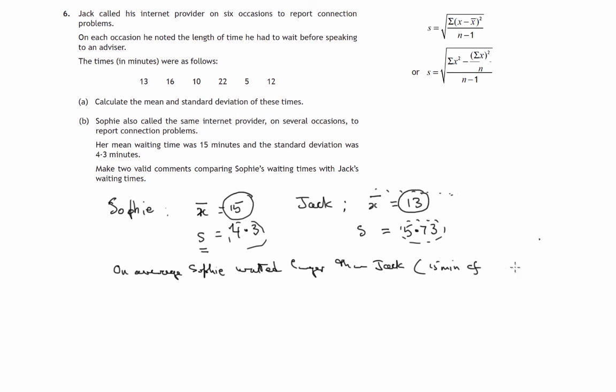So on average, Sophie waited longer than Jack. That is 15 minutes compared to 13 minutes. So there's the first thing.